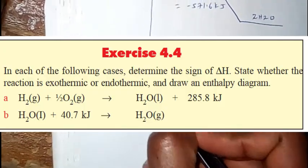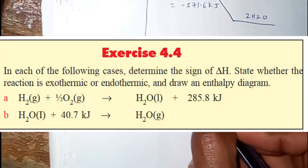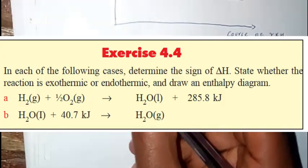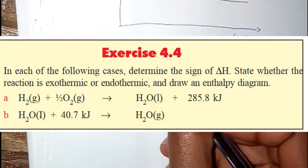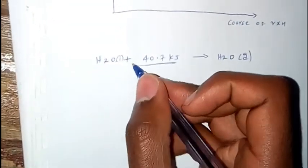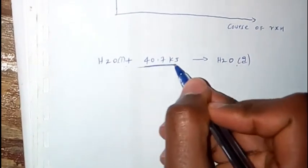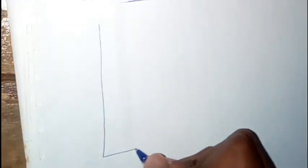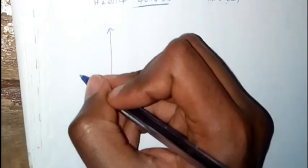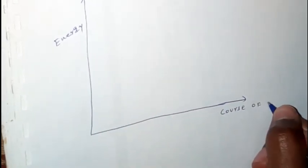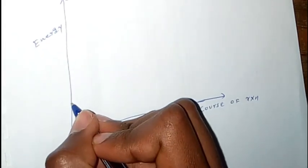H2O liquid plus 47 kilojoules gives us H2O gas. Water liquid absorbs heat to become water gas. This is an endothermic reaction because heat is absorbed.